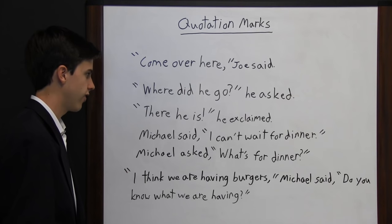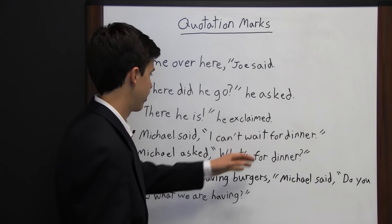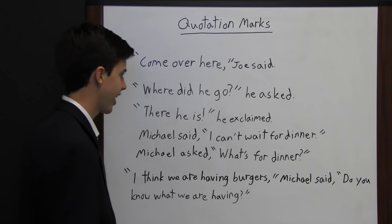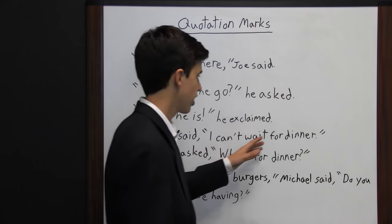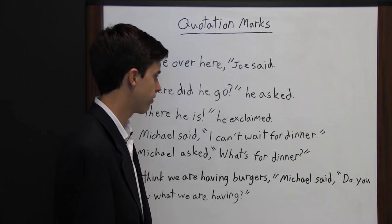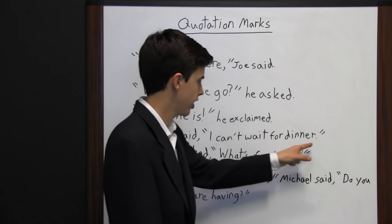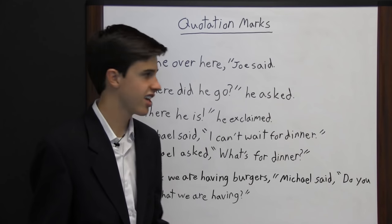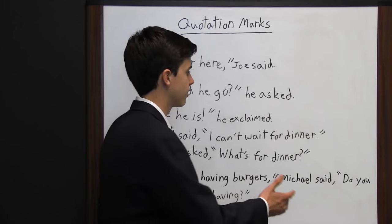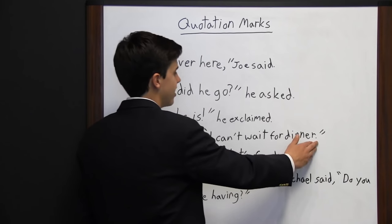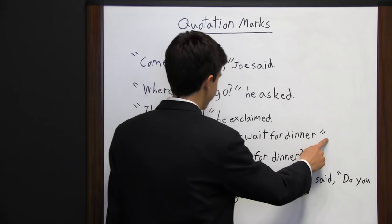The next couple of sentences are inverted — the quote comes later. 'Michael said, I can't wait for dinner.' You put a comma after 'said,' open with quotation marks, go through the sentence, and since it's declarative, end with a period inside the closing quotation marks. Notice that up in the first example we ended with a comma, but here we end with a period because we've come to the end of the whole sentence, and there needs to be a period — or question mark or exclamation mark — to close it out.